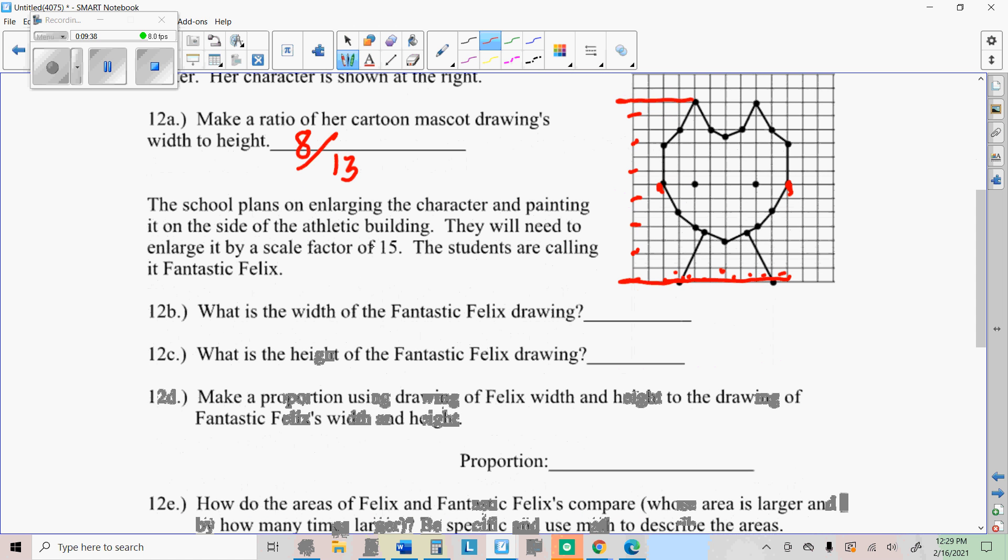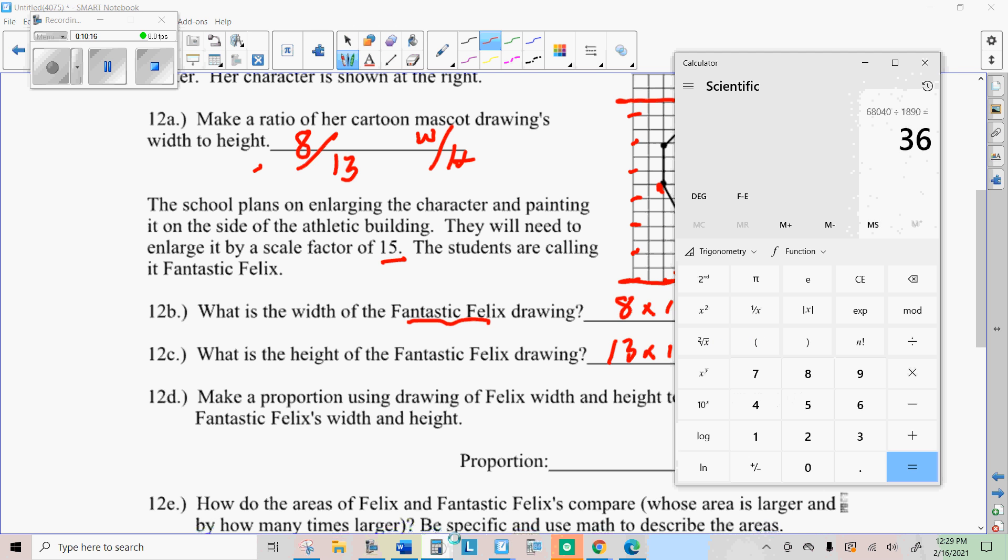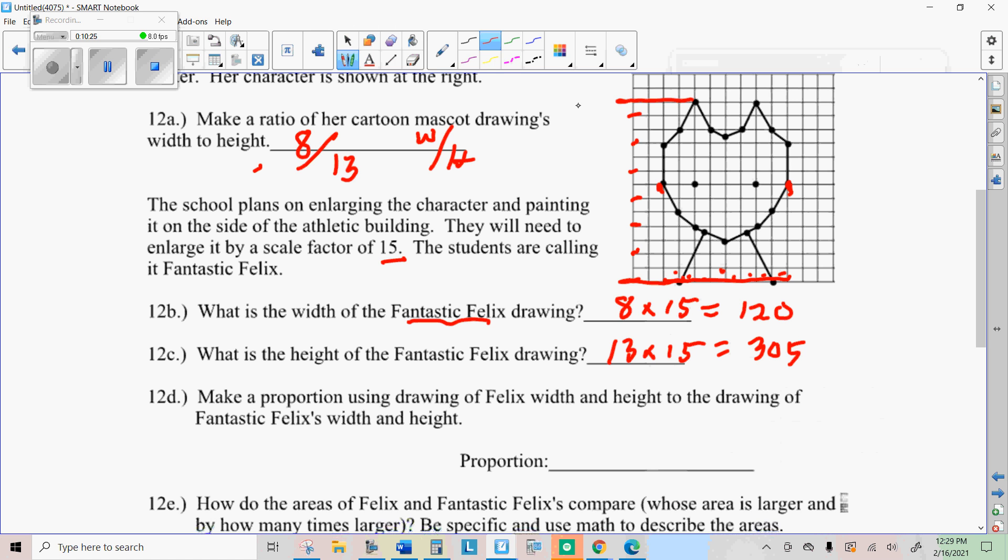The school plans on enlarging the character and painting it on the side of an athletic building. They need to enlarge it by a scale factor of fifteen. What is the width of this new fantastic Felix drawing? So you need to multiply the original width, which was eight. Remember, this is width over height. So eight times fifteen, which is 120. And the height will be the original height, thirteen times fifteen, which is 195.